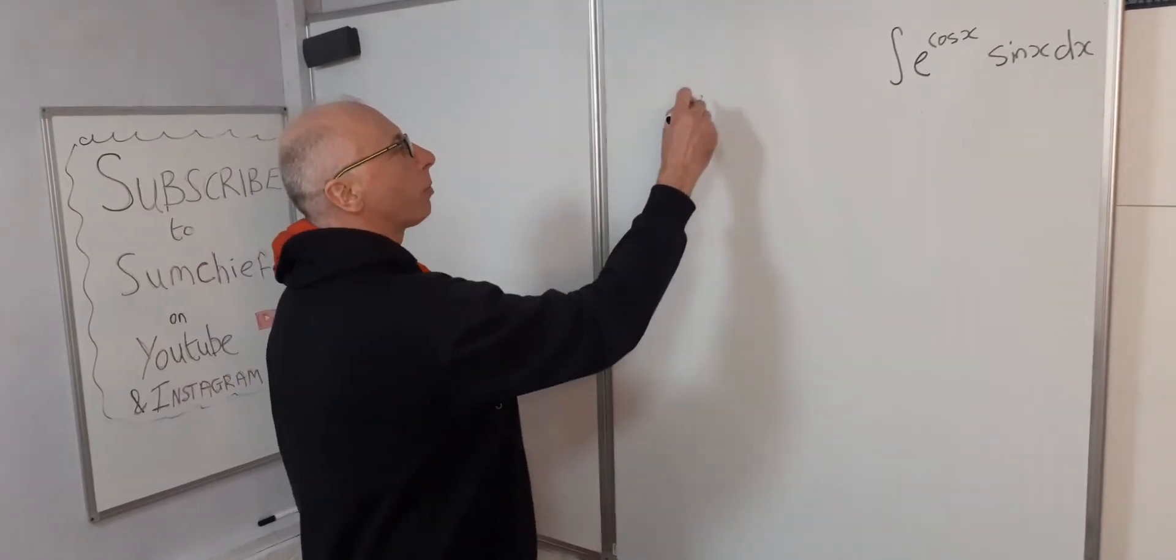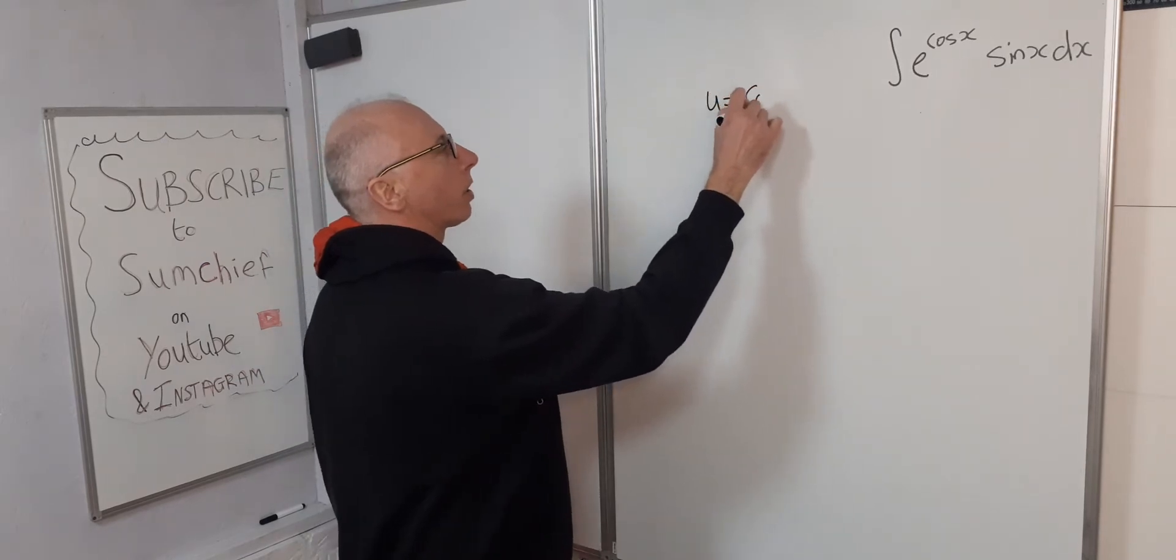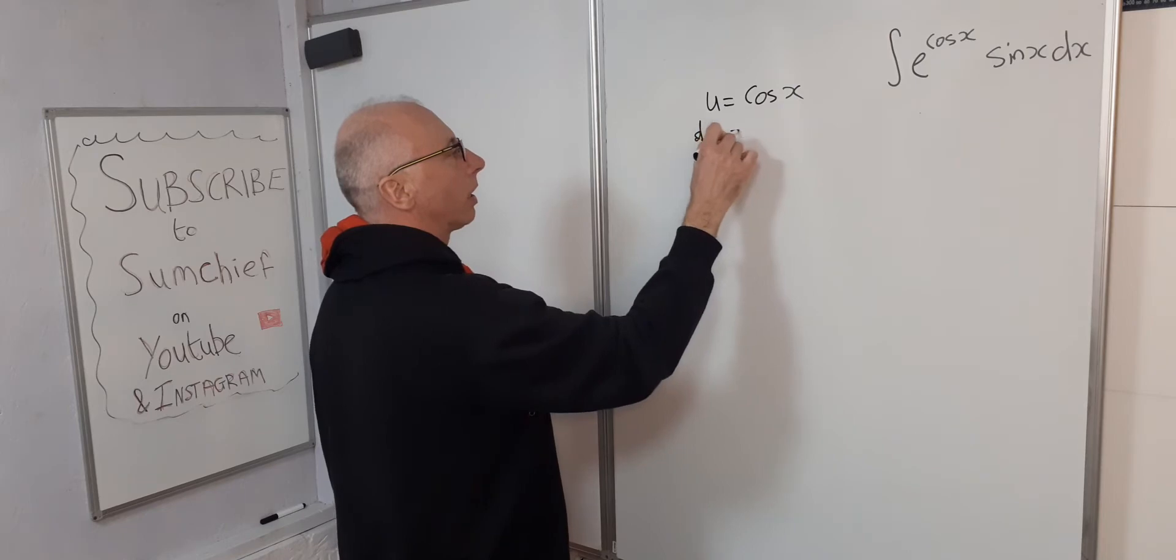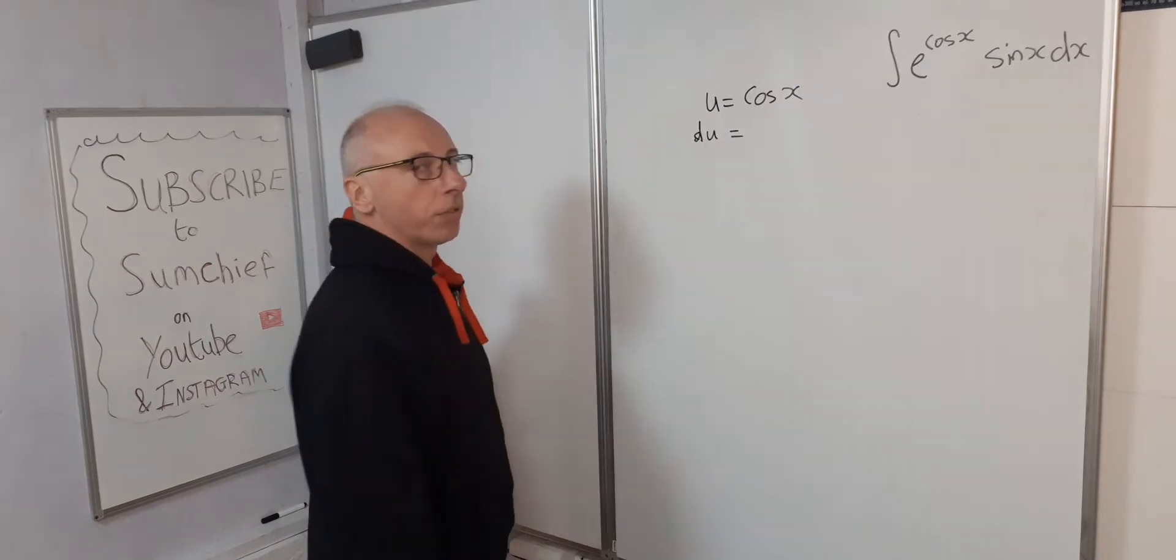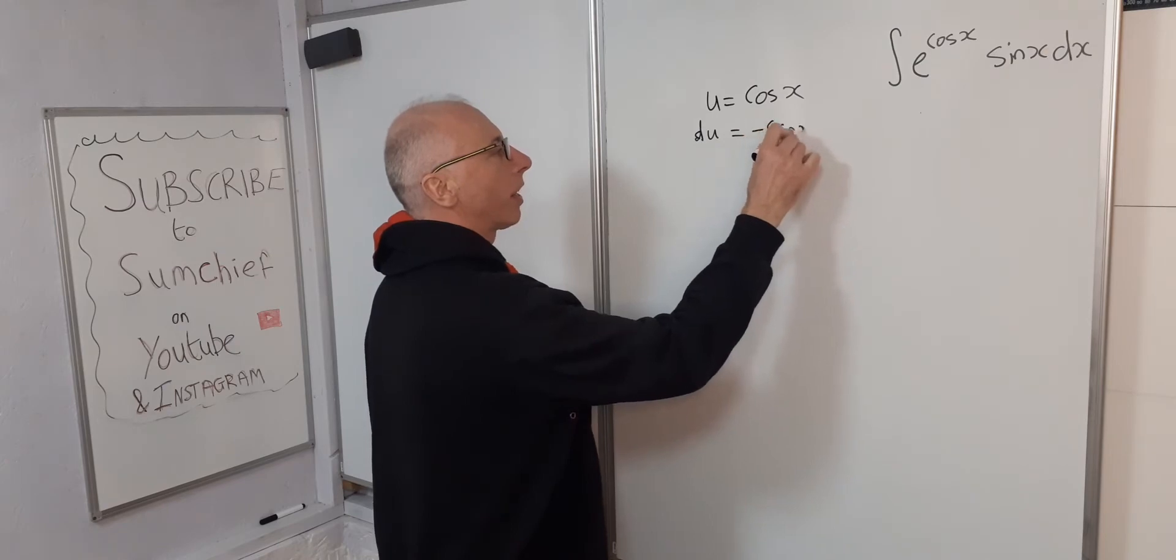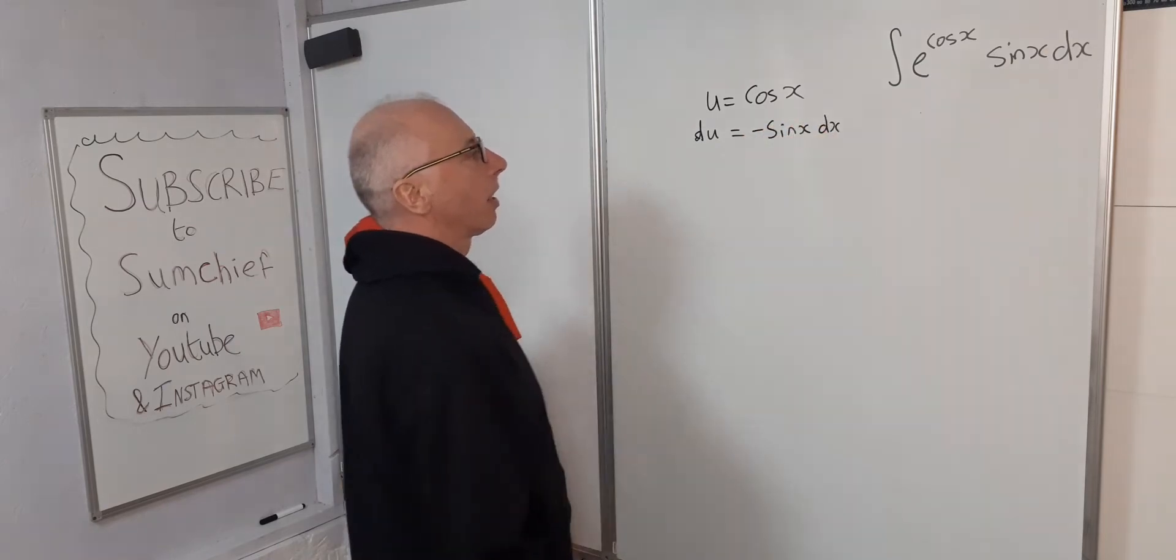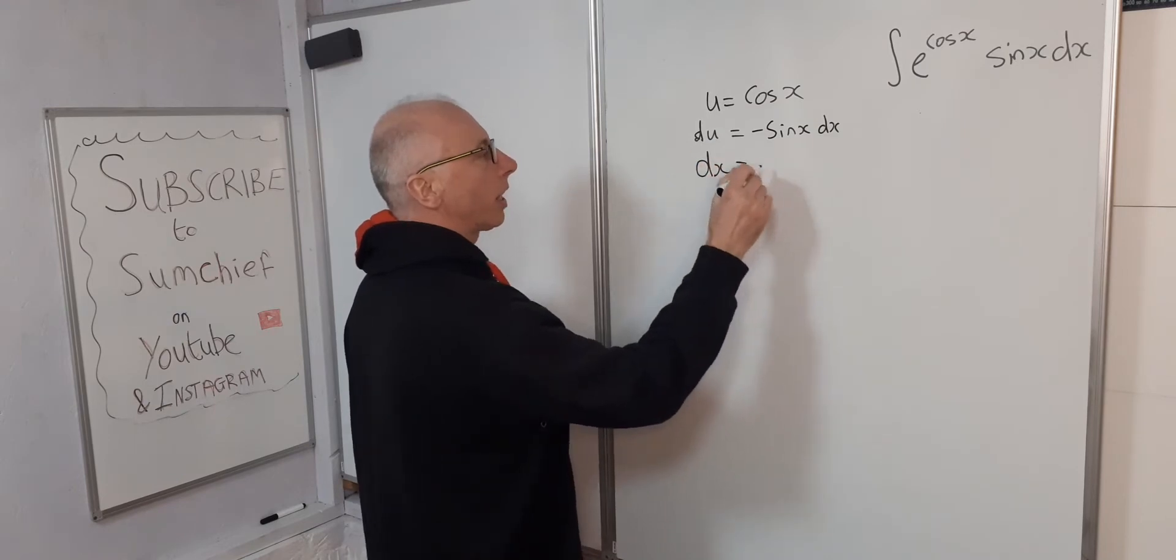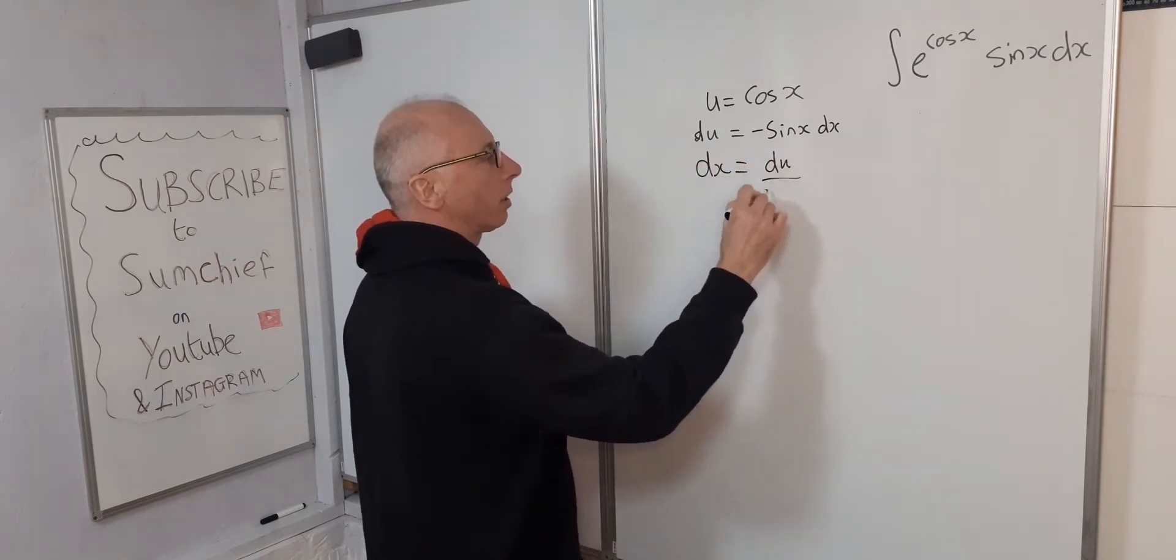So let's do usual business: u equals cosine x, du equals derivative of cosine x, negative sine x dx. And now get dx on its own. So dx equals du over minus sine x.